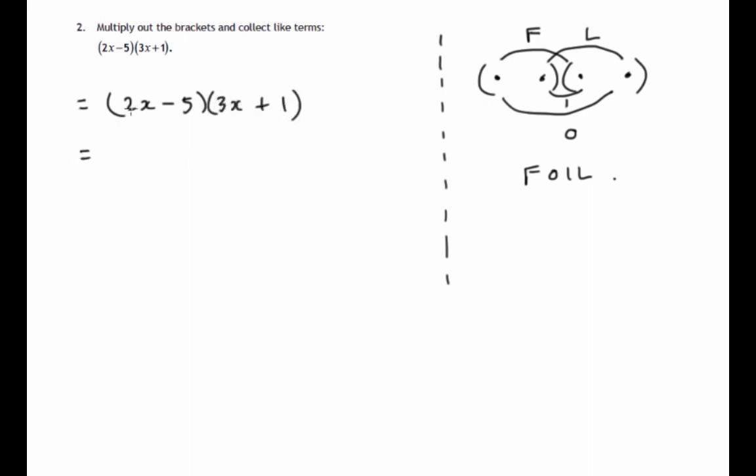So the firsts, 2x times 3x. 2 times x times 3 times x. These are 6. x times x is x squared. So we get 6x squared. That's the first two.